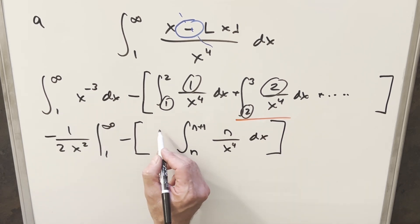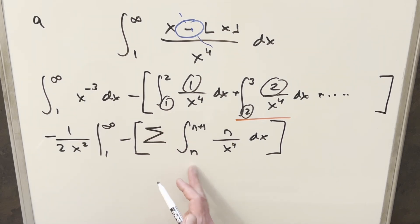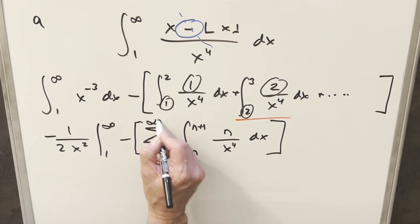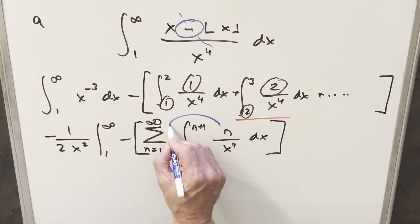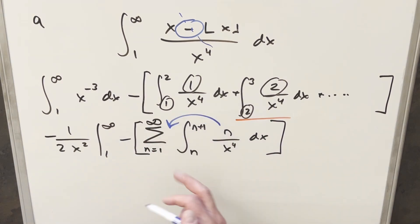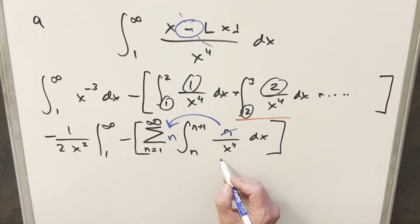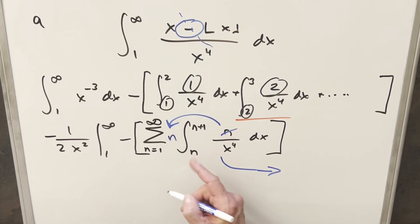We're going to be summing this, so we can write this as a summation where n equals one, going all the way to infinity. Since n is a constant value inside the integral, we can just bring it out front and integrate the remaining expression on the side.